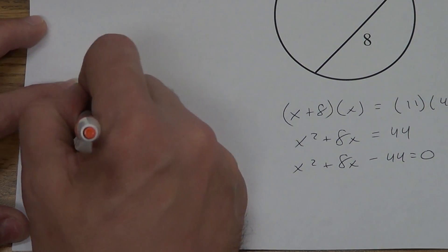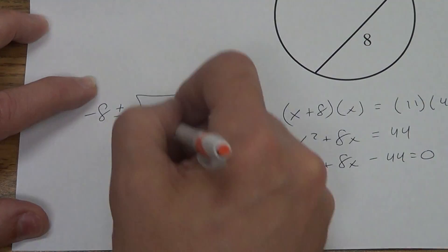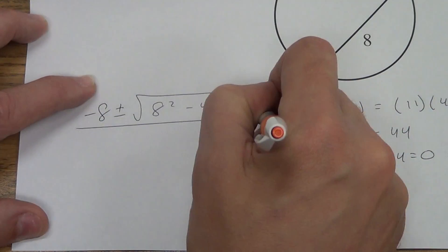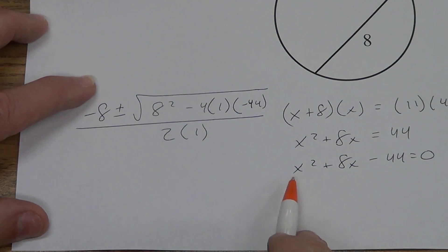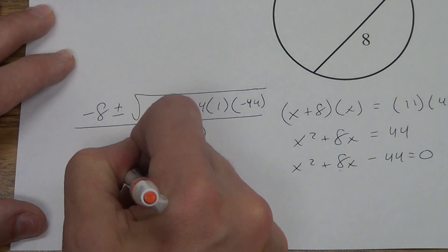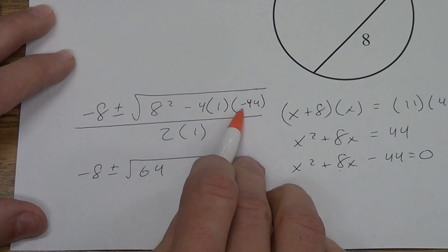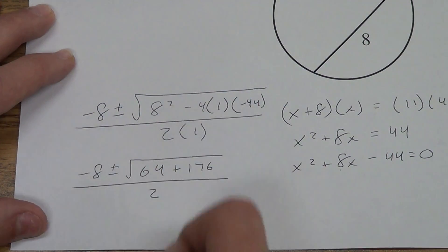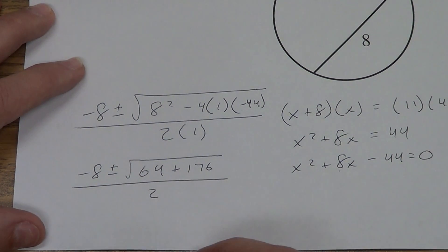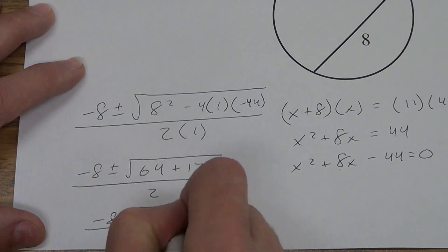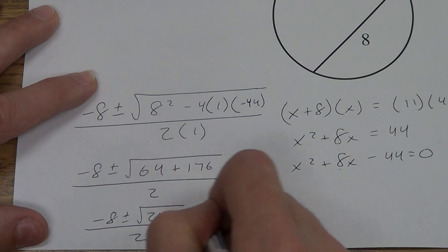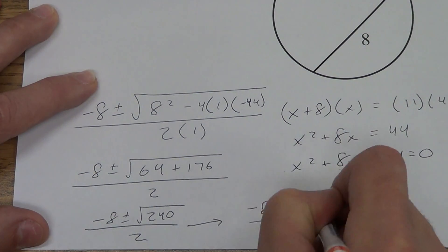Quadratic formula, let's see if we remember that. Negative b plus or minus the square root of b squared minus 4 times a times c all over 2 times a. a is this number, which is a 1. b is this number, which is 8. And c is this number, which is a negative 44. Negative 8 plus or minus 64 minus and a negative, those are going to cancel, 4 times 1 times 44 is 176 over 2. 64 plus 176 is 240. So I have negative 8 plus or minus the square root of 240 over 2. 240, if you break that down, you eventually get 4 root 15.